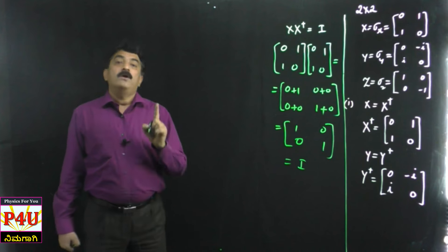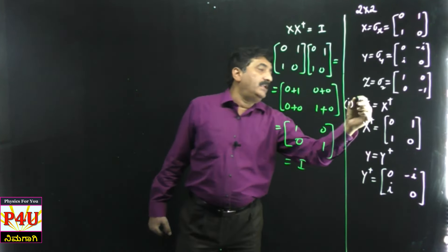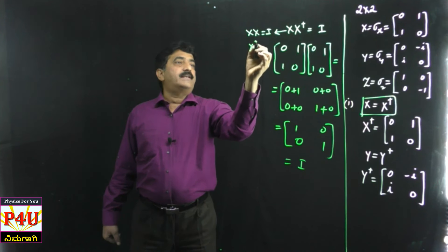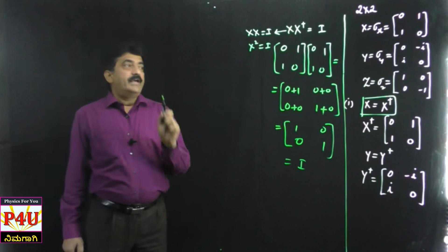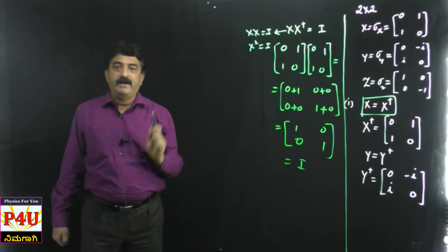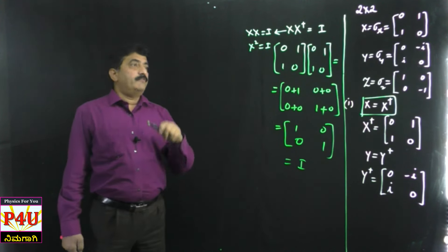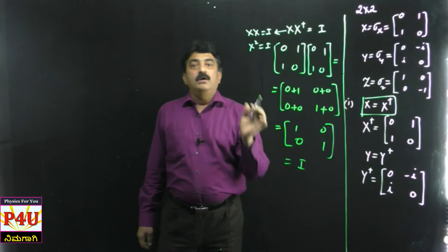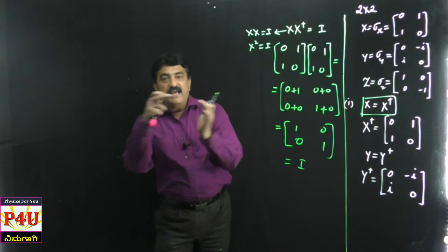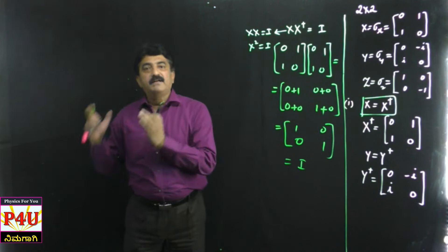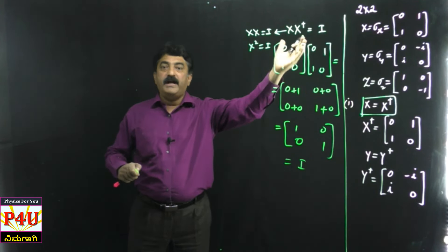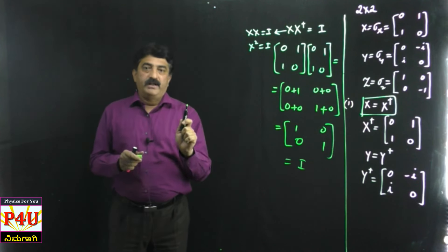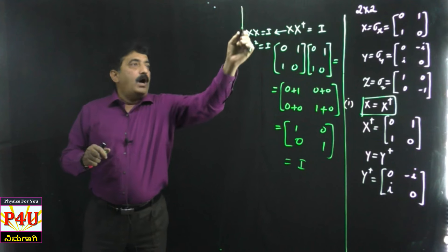So when X·X† is multiplied, you get I - the identity matrix. And since X and X† are both the same matrix, I can write this as X·X = I, that is X² = I. The square of a Pauli matrix is always equal to the identity matrix. So whether you take the square or use the unitary property, both are the same. Pauli matrices are Hermitian and Pauli matrices are unitary.